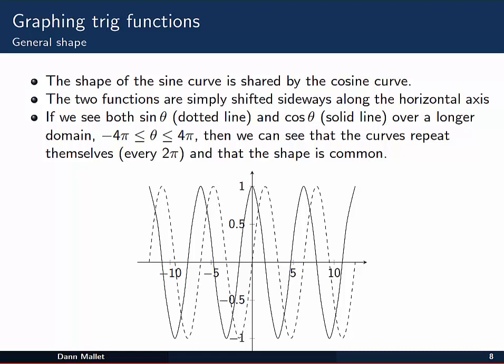As I mentioned earlier, the shape of the sine curve is shared by the cosine curve. The two functions are simply shifted sideways along the horizontal axis. If you look at the picture, we see that sine theta, which is the dotted line, and cosine theta, the solid line, when shown over this much longer domain of minus 4 pi to 4 pi, the shape is identically the same. The only difference is that the cosine curve is shifted slightly along the axis compared with the sine curve. But their heights, or amplitude, and the frequency or period over which they repeat themselves, is also the same.